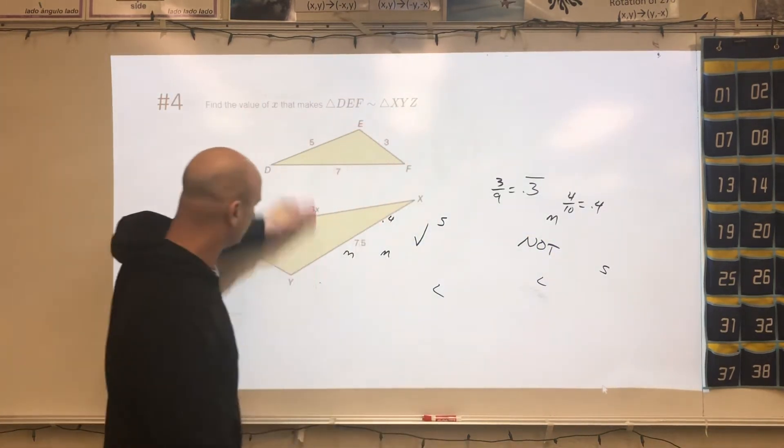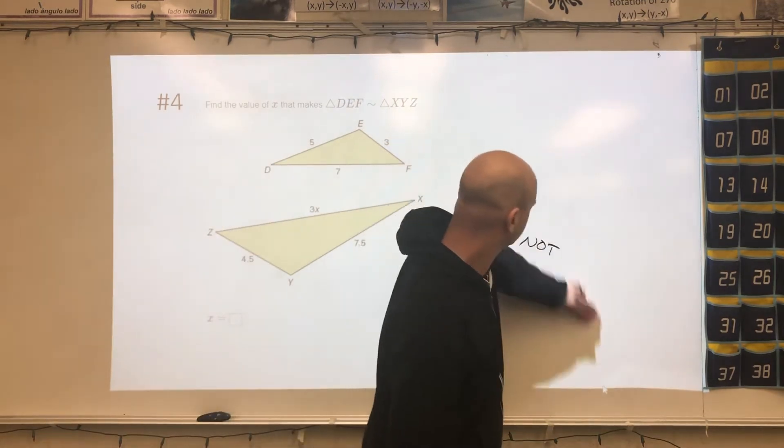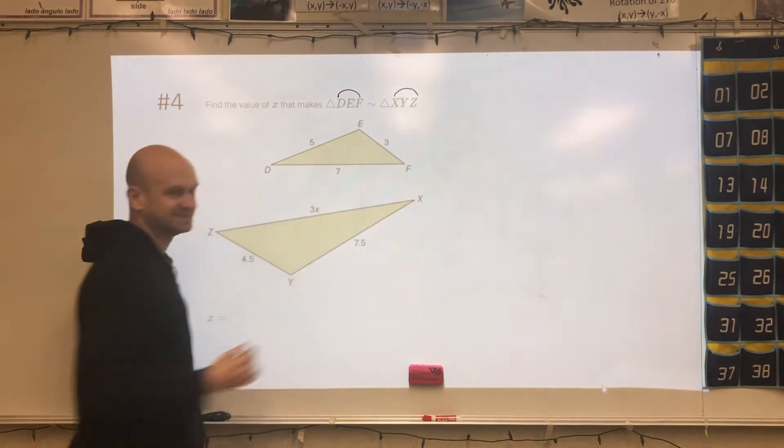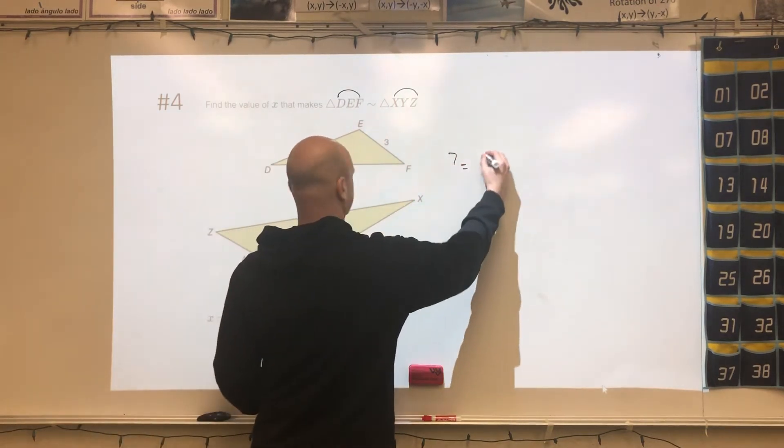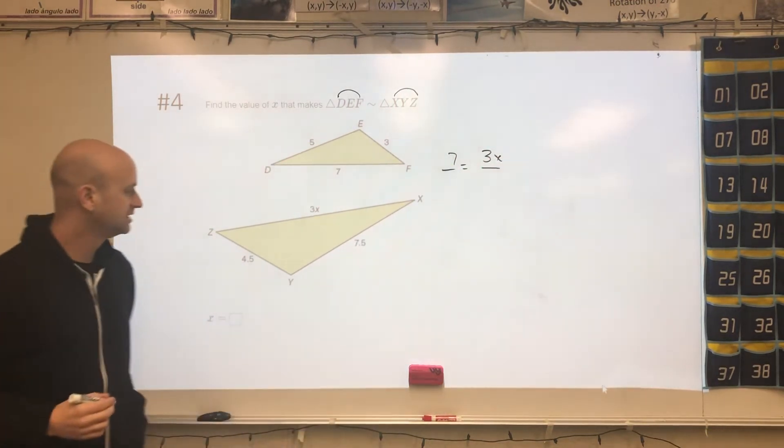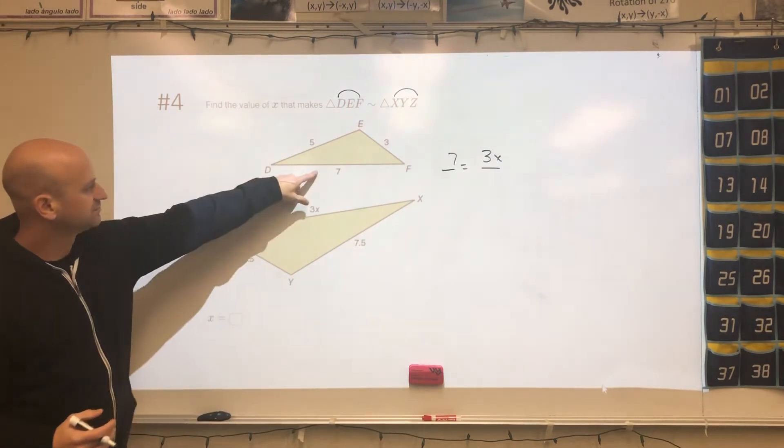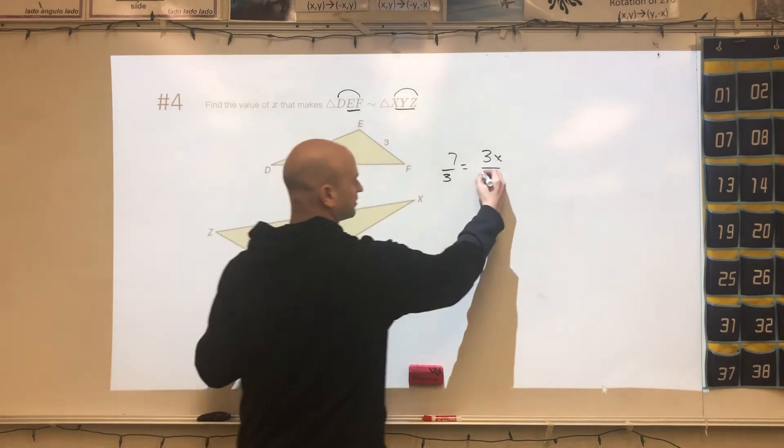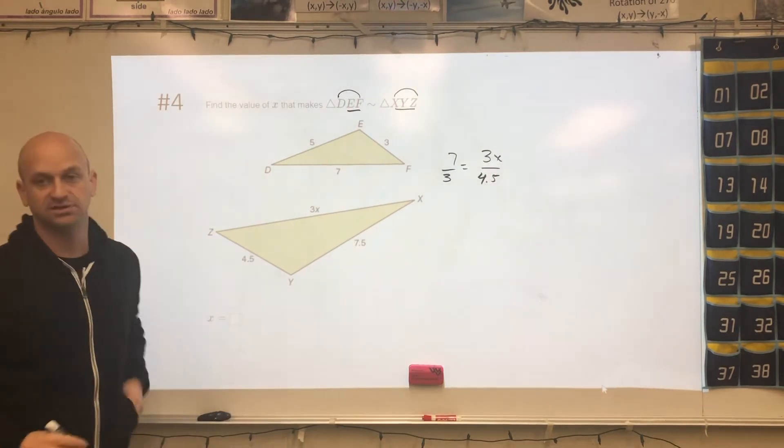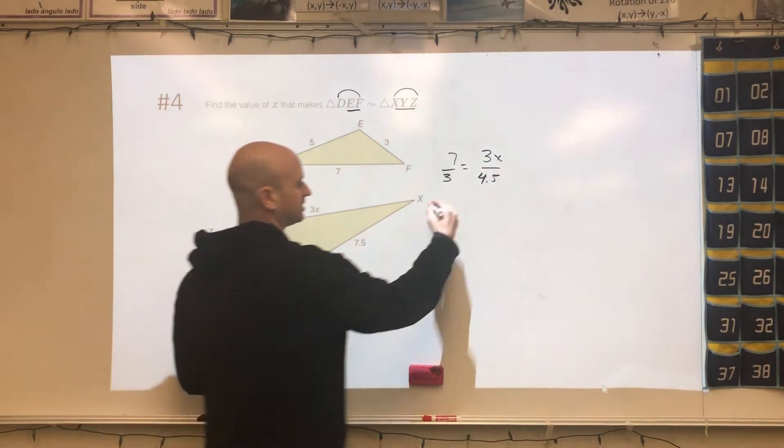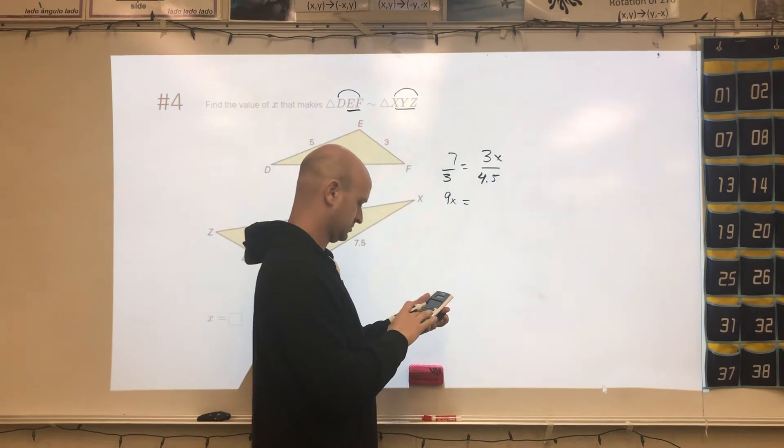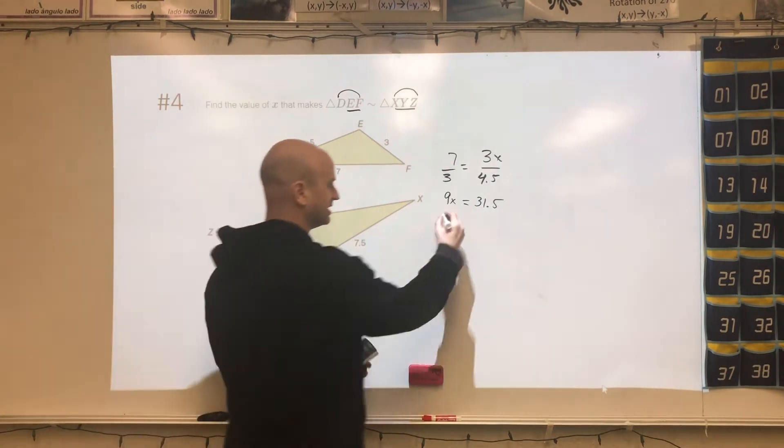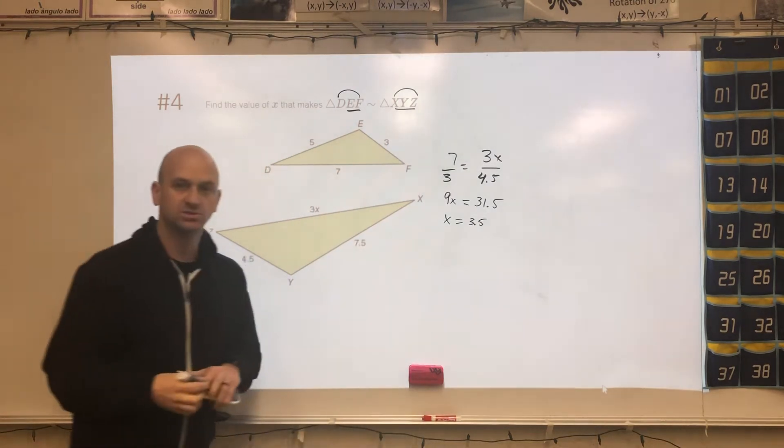All right, next one. We want to solve for a missing side length. Use the similarity statement to help you out. So the missing side length is XZ, and that's going to partner up with DF, which is 7. And that's going to equal and partner up with 3X. And now I can pick any other value as long as it matches up. So from the 7, I'll pick EF, which is 3, and that's going to go with YZ, which is 4.5. I could have picked the other values. So now we'll cross multiply. So I get 9X equals 31.5. And then divide each side by 9, and I get X equaling 3.5.